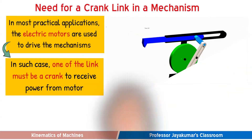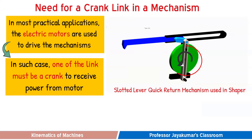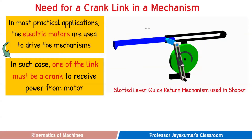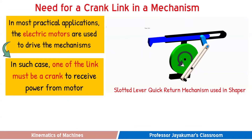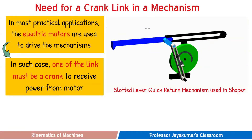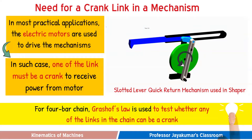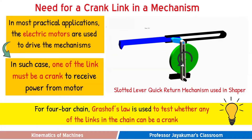Finally, consider the crank and slotted lever mechanism used in machines like shapers. Even there, the electric motor is coupled with a link which can rotate. So these examples very clearly indicate that in practical applications, we need to design the mechanism so that it can be driven by a motor. For that, the input link must be a crank.